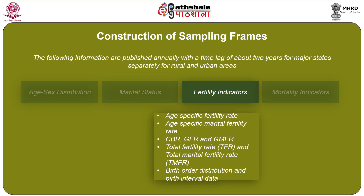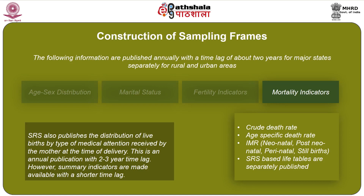Mortality indicators published include: (4) crude death rate, age-specific death rate, infant mortality rate — including neonatal, post-neonatal, perinatal and still births — and SRS-based life tables which are separately published. SRS also publishes the distribution of births by type of medical attention received by the mother at the time of delivery. This is an annual publication with a 2 to 3 year time lag.